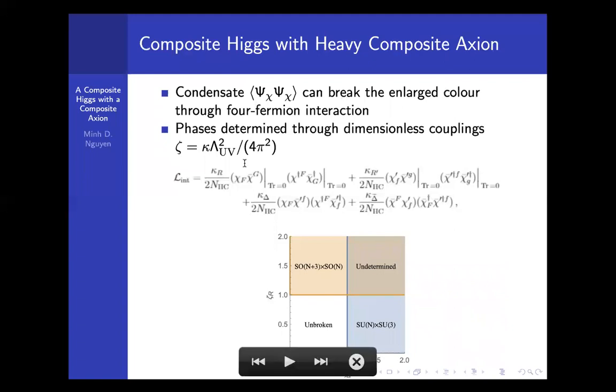In this case, the ζr and ζr' correspond to the coupling κr and κr' and that controls the coupling of the same family. The κδ and κδ̃ actually couples the particle from the SU(N+3) to SU(N)'. If the ζδ and ζδ̃, which means the cross coupling is strong, then it turns out that the symmetry can be broken to SU(N) × SU(3).